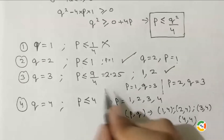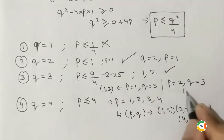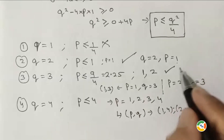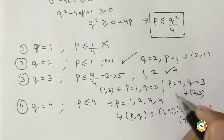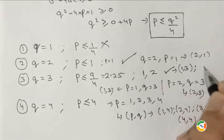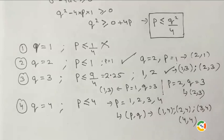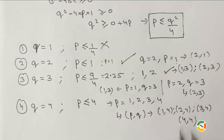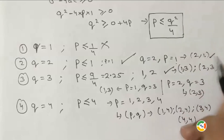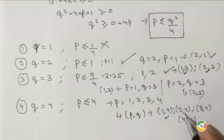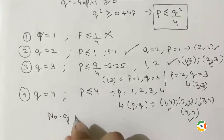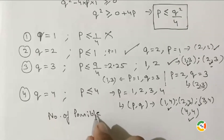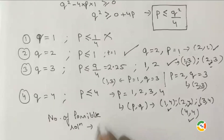Collecting all valid pairs: (1, 2) from q=2; (1, 3) and (2, 3) from q=3; and (1, 4), (2, 4), (3, 4), (4, 4) from q=4. Counting all solutions: 1 + 2 + 4 = 7. Therefore the total number of possible equations with real roots is 7.